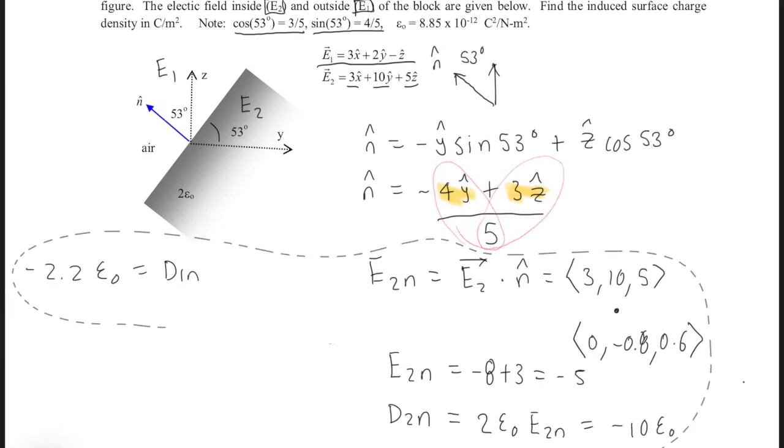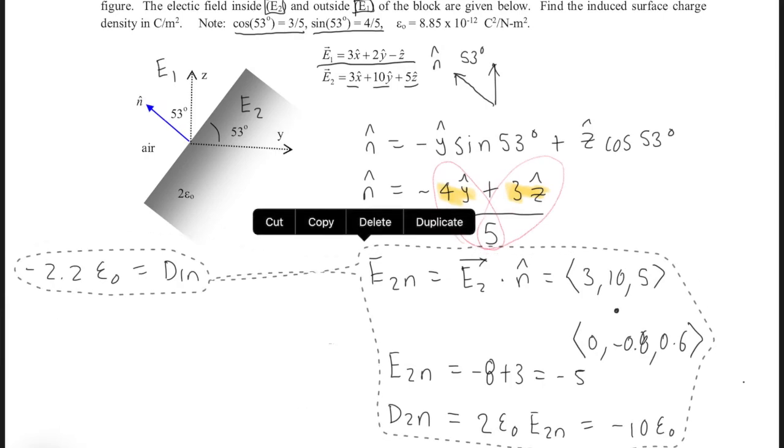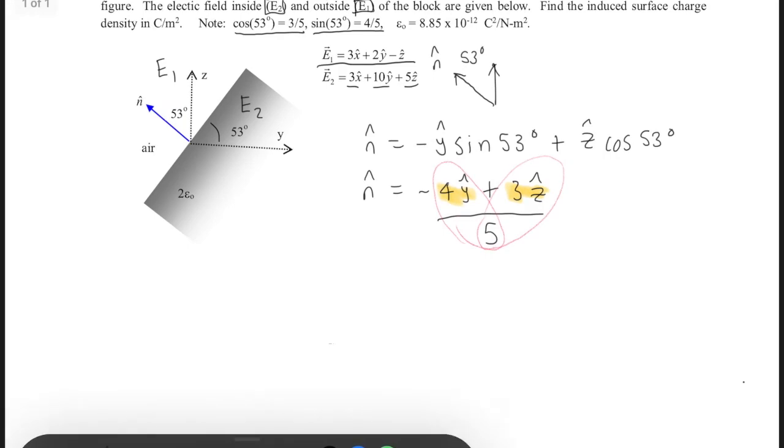I'm just going to rewrite them so it's a little bit easier to see. We have D1n = -2.2ε₀, and then D2n, which is -10ε₀.